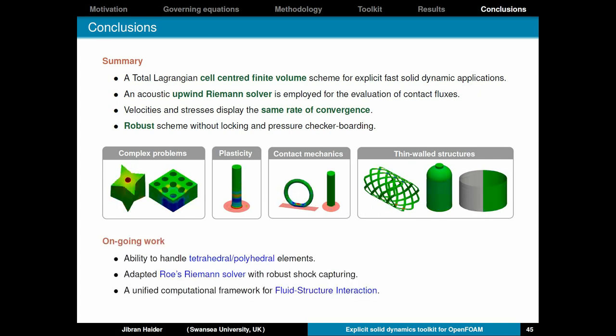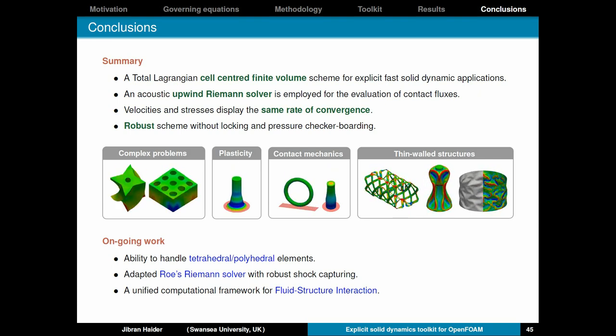As part of the ongoing work, we are working on various fronts. The first one is the ability to handle tetrahedral and polyhedral elements, which is very useful for complicated geometries. Secondly, we are employing a Roe-type Riemann solver which will enable us to capture shocks more accurately. And at the other front is working on a unified computational framework for fluid structure interaction.